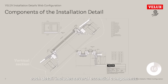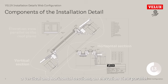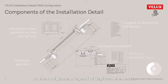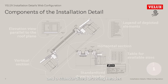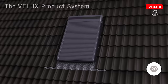In line with best practices and traditional drafting standards, each detail includes several essential components: vertical and horizontal sections, an elevation view parallel to the roof plane, a legend of depicted elements, a table of available sizes for the selected Velux products, and a standardized drawing header.